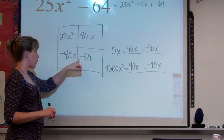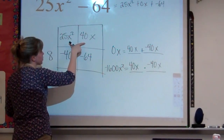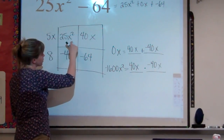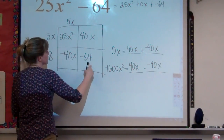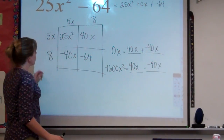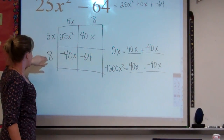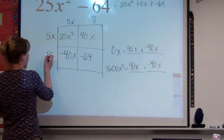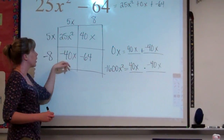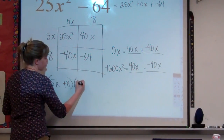When adding to get 0, the numbers have to be the same but positive and negative — in this case 40 and negative 40. 40 times negative 40 is negative 1600, and 40 plus negative 40 is 0. We put 40x and negative 40x in the box. Going across, what goes into negative 40x and negative 64? That's 8. What goes into 25x squared and 40x? That's 5x. Making the 8 negative: 5 times negative 8 is negative 40, and 8 times negative 8 is negative 64. So our answers are 5x plus 8 and 5x minus 8.